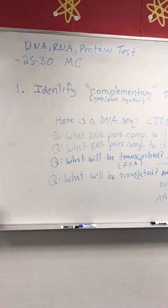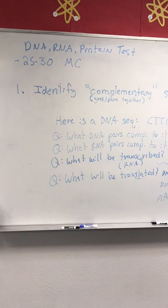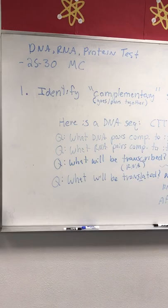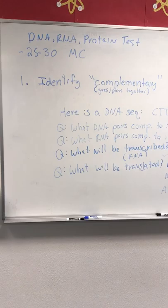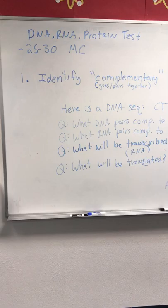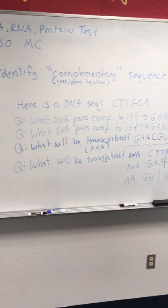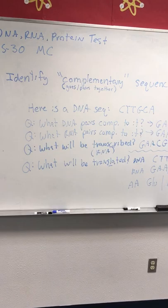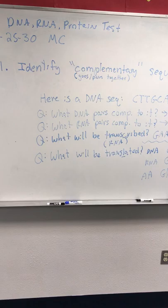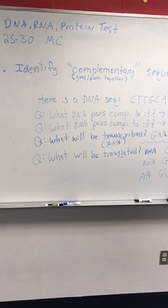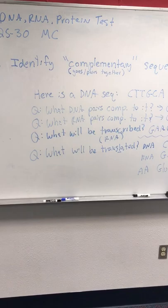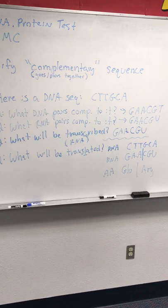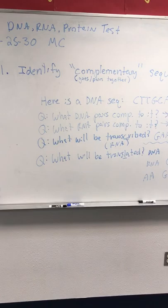The test will have approximately 25 to 30 multiple-choice questions. The first topic is identifying a complementary sequence. 'Complementary' means it goes with — like complementary colors. For example, given the DNA sequence C-T-T-G-C-A, if asked what DNA pairs complementarily to it, you give the opposite: G-A-A-C-G-T.